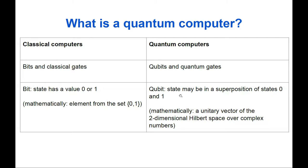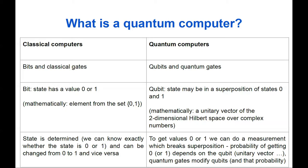A single bit may have a state that takes one of two possible values, 0 or 1 — mathematically just an element from the set {0, 1}. In the case of qubits and quantum computers, the state may be in a superposition of state 0 and 1. Mathematically it's a unitary vector of the two-dimensional Hilbert space over complex numbers — something much more complicated.